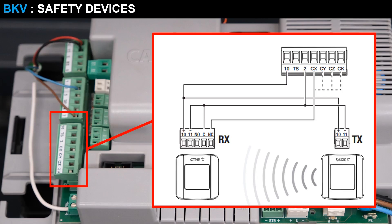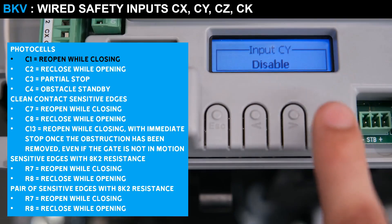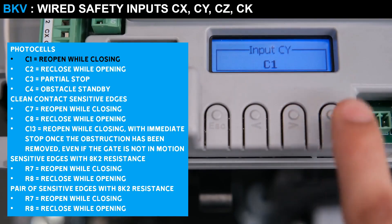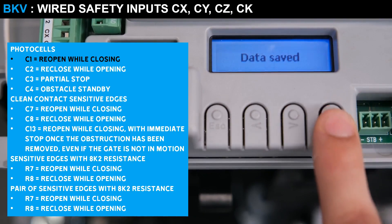The BKV has a terminal block dedicated to wired safety devices with four input terminals to connect photocells and clean or resistive contact sensitive edges. The wizard asks us to set the first safety input CX, choosing between specific functions for photocells and sensitive edges in case of obstacle detection. In our case, we will set the pair of photocells in C-1, i.e. gate reopening in case of obstacle detection during closing.